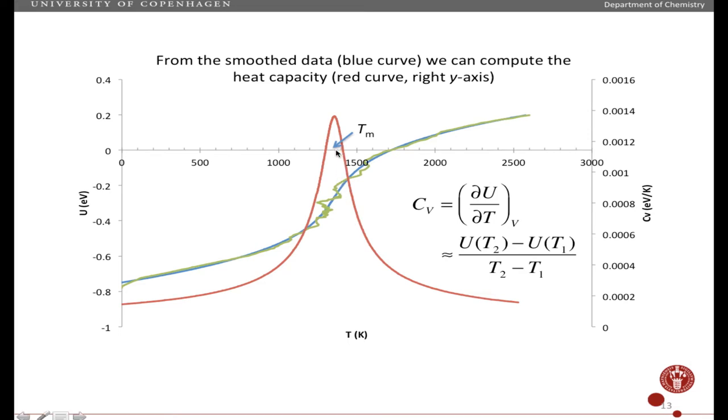And that, as we saw in the simulation, is where the particle melts. So that is the melting temperature right here, where the heat capacity is a maximum.